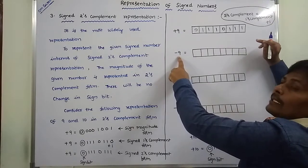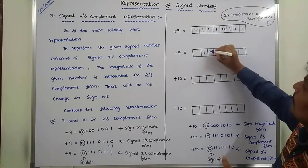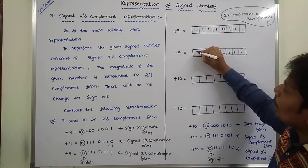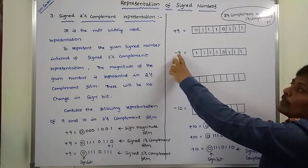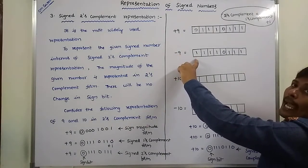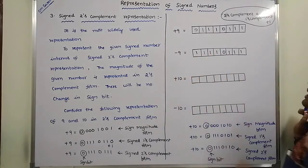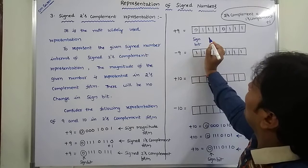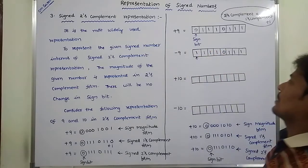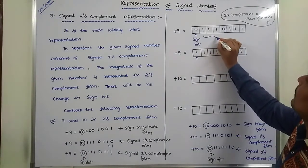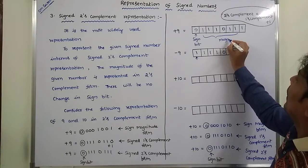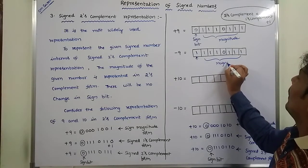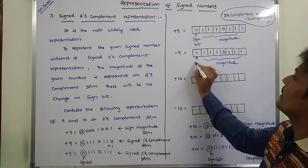Now for minus 9, the magnitude is the same as plus 9, but the sign bit is 1 because there is a negative sign. To represent a negative number, we put the sign bit as 1 at the MSB position. This is the sign bit, and this is the magnitude.